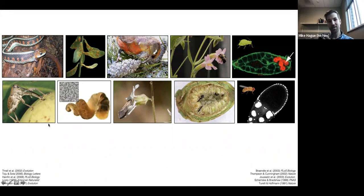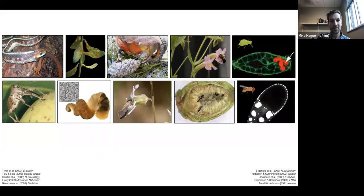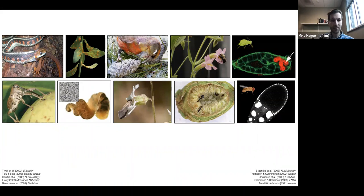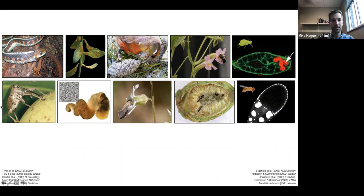Antagonistic interactions between host and pathogen, host and parasite, or predator and prey can generate really intense reciprocal selection between natural enemies, which can drive really rapid co-evolutionary dynamics. For example, that can be characterized by red queen dynamics, like negative frequency-dependent selection between host and pathogen, or arms race co-evolutionary dynamics — and that's what I want to talk about today.